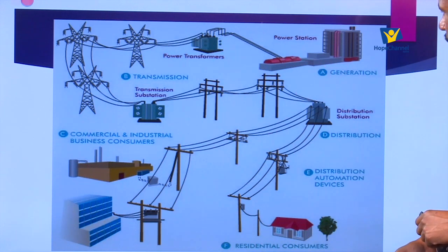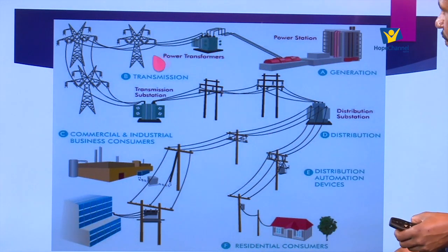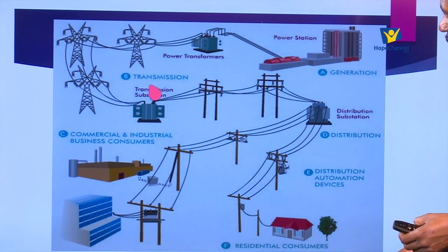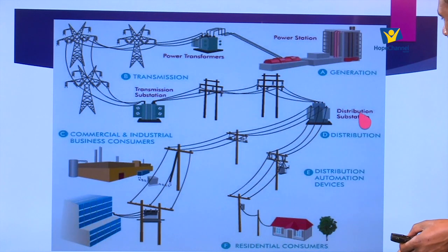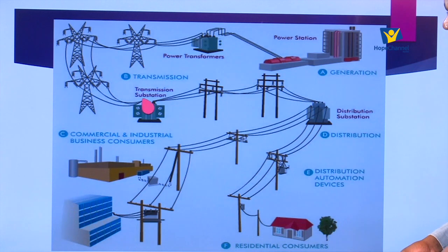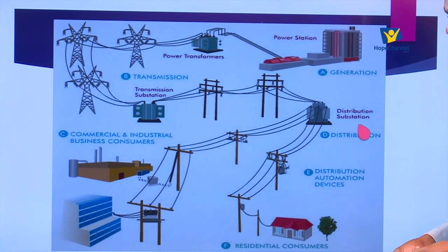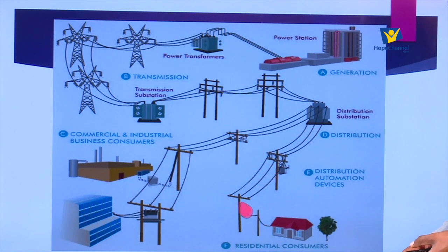We have the power station, the step-up transformer, the pylons, and the transmission substation where the power is reduced to values more convenient for use at home. After the transmission substation we have the distribution substations. From the distribution substation we have the commercial industries, heavy industries, and light industries. Then another distribution substation and the small local transformers right next to houses.